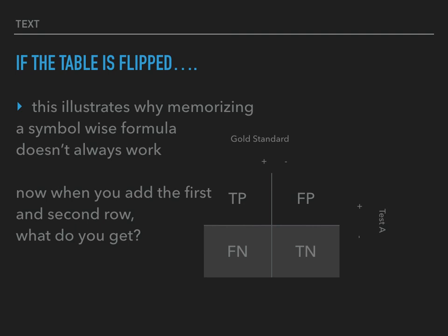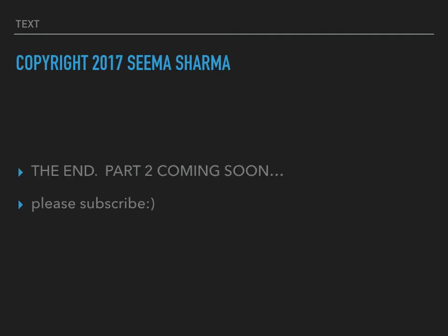Notice that if the table is flipped, you get different values for two of the cells. Memorizing a formula from a book doesn't help — you just need to know how to group things, notice patterns, and categorize based on whether they agree between the gold standard and the testing question. That is my concise explanation of positives, negatives, trues and falses, and specificity and sensitivity. Part two is coming soon — please subscribe to my channel.